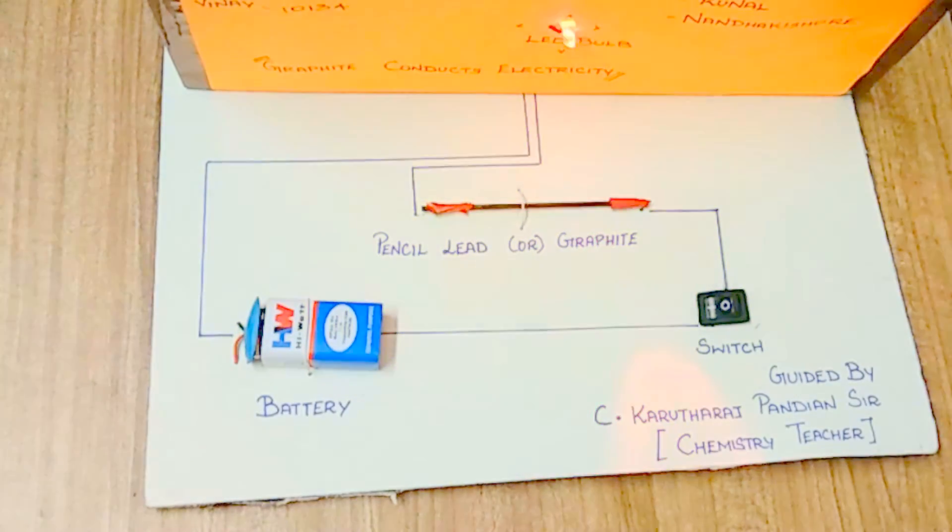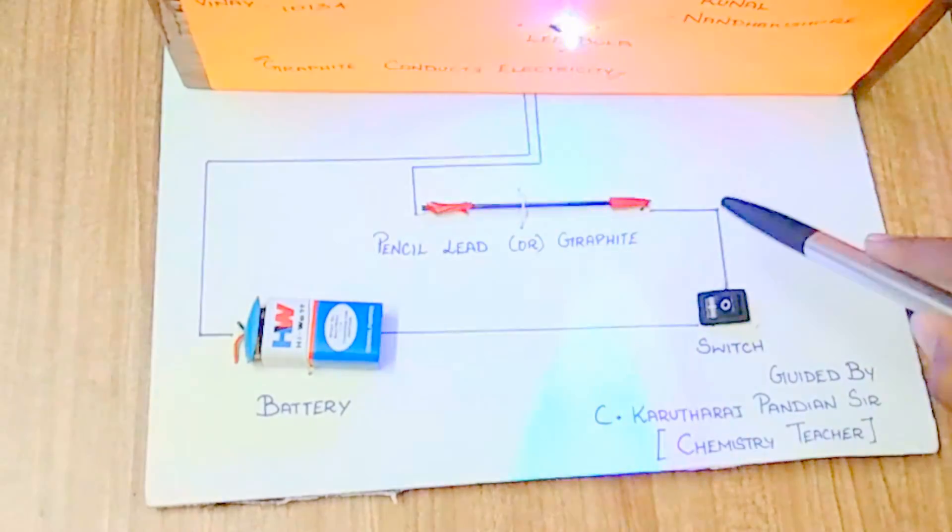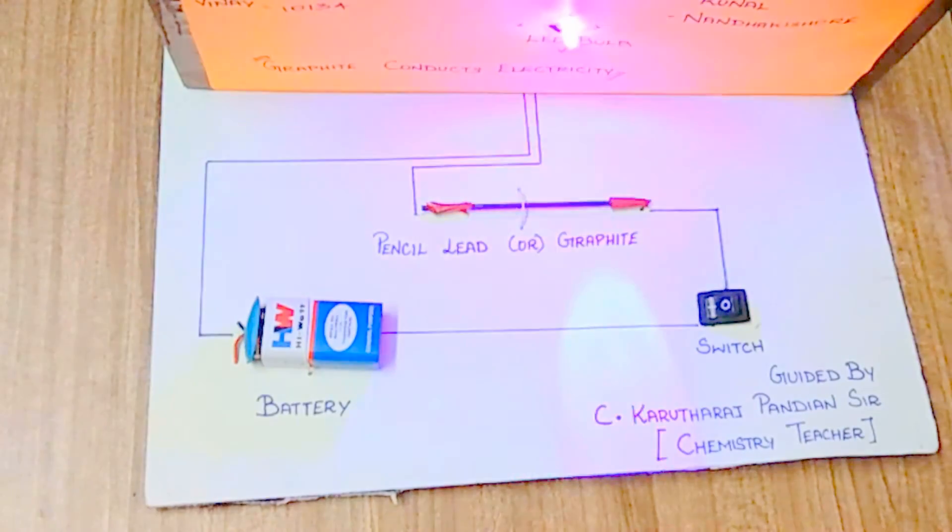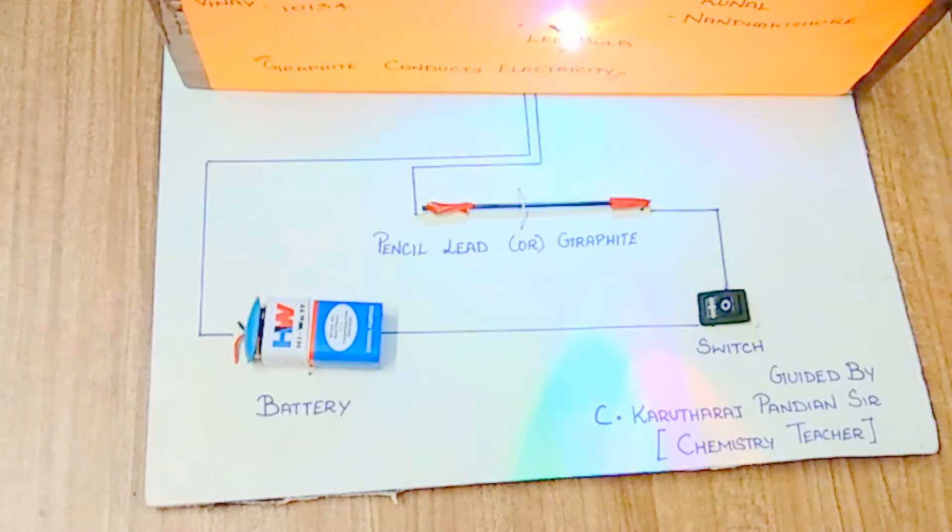So we have not placed a resistor here because the normal resistance required for an LED bulb is nearly 180 to 200 ohms, and the resistance given by the graphite is about 180 ohms. So there is no requirement for a resistor, so we have not placed it over here.